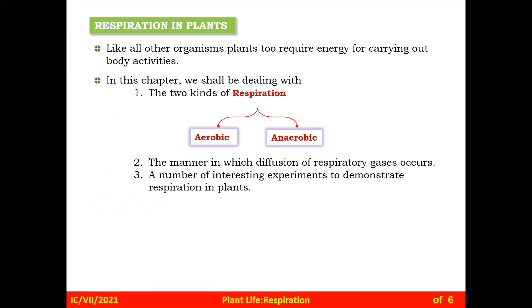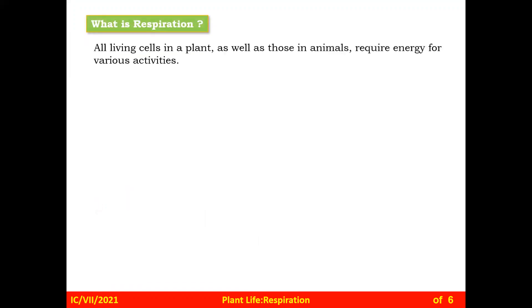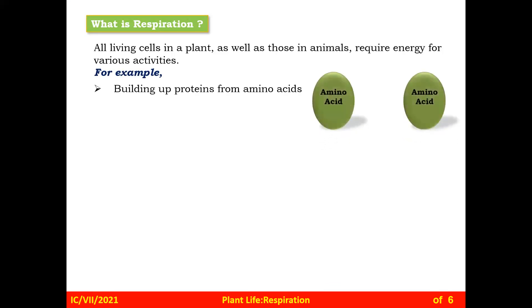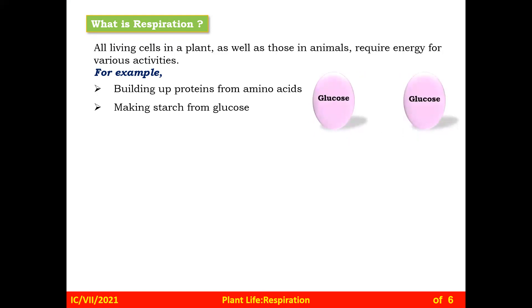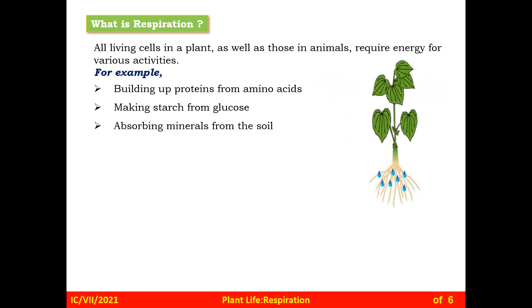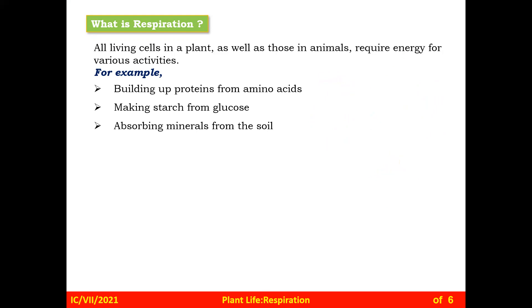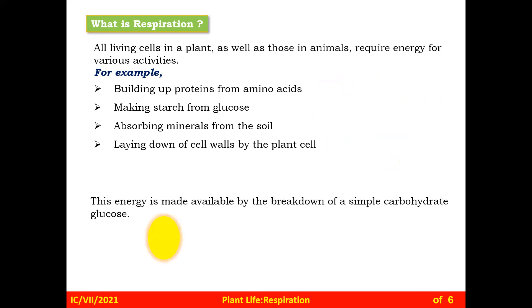All living cells in plants as well as in animals require energy for various activities, for example: building up of proteins from amino acids, making starch from glucose, absorbing minerals from the soil, and laying down of cell walls by the plant cell. This energy is made available by the breakdown of simple carbohydrates, that is, glucose.